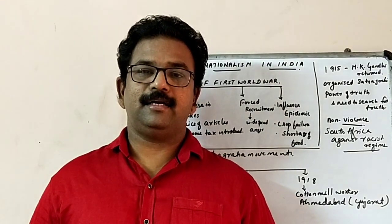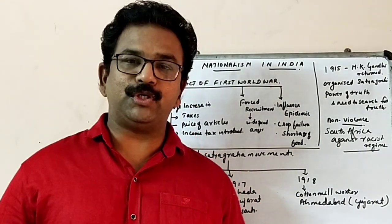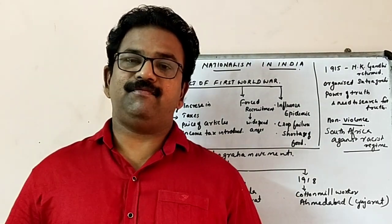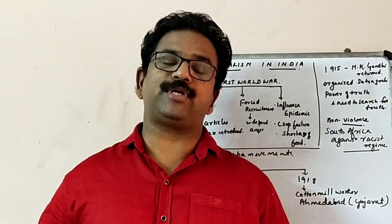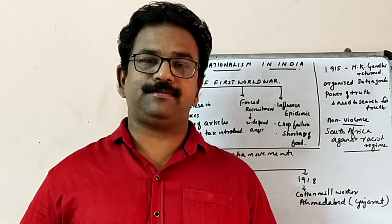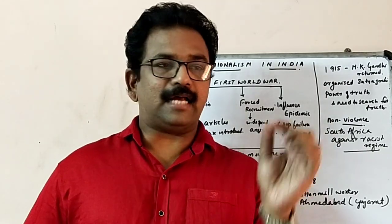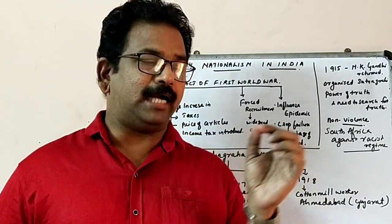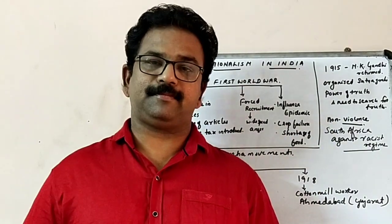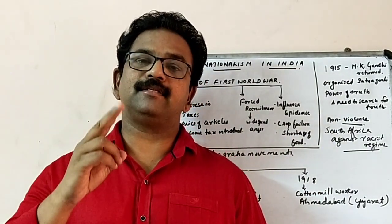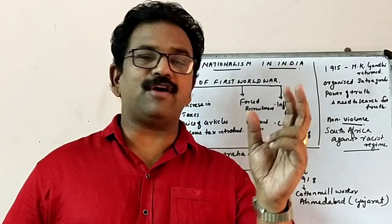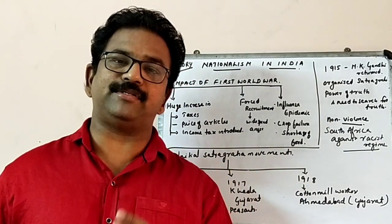Dear students, today I am going to start the history chapters. According to the current syllabus, we have to learn a total of four chapters of history. Three are compulsory and one is a choice. The compulsory chapters are: Nationalism in India, Nationalism in Europe, and The Print Culture and the Modern World. The optional chapter is one of either The Making of the Global World or The Age of Industrialization.